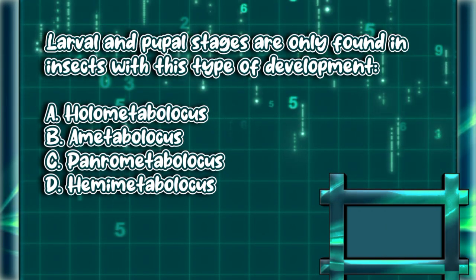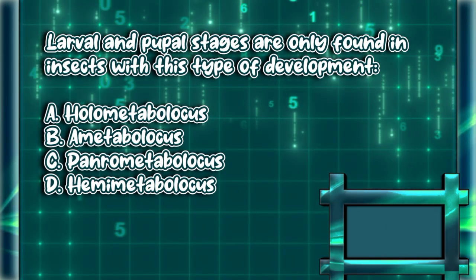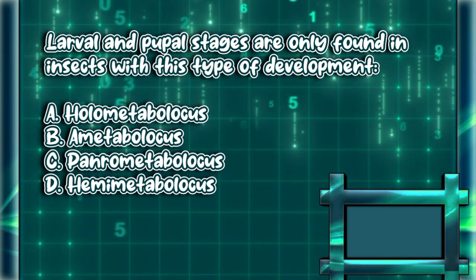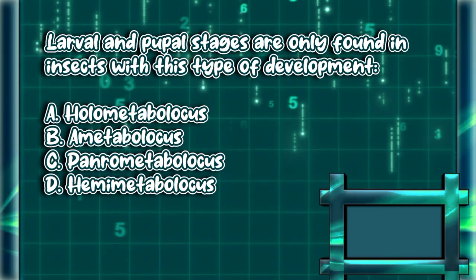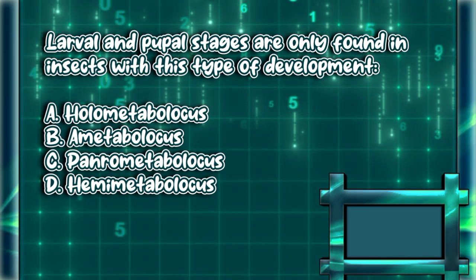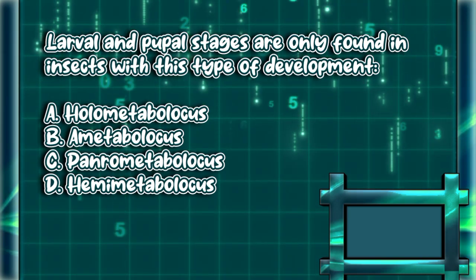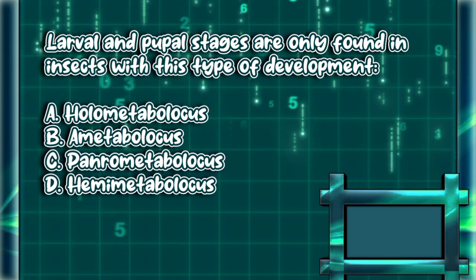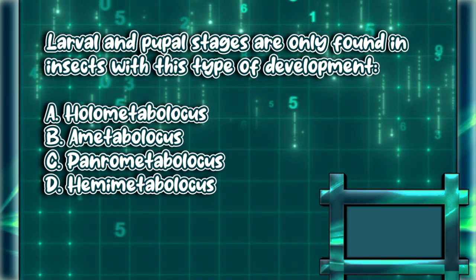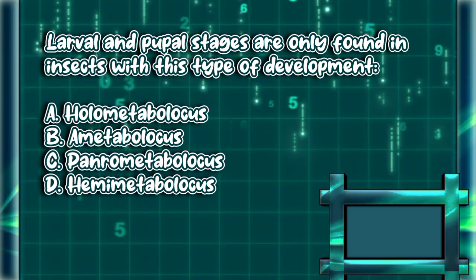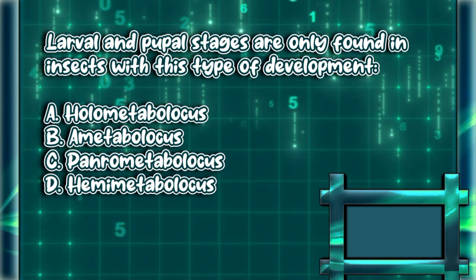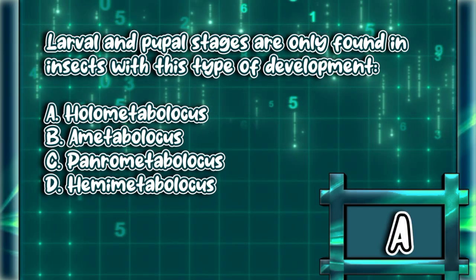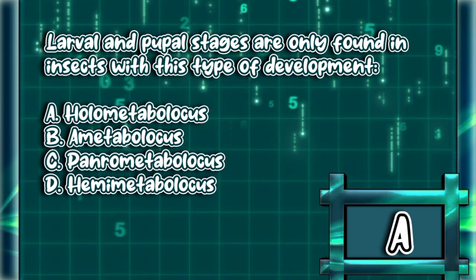Larval and pupal stages are only found in insects with this type of development. A. Holometabolous. B. Ametabolous. C. Panrometabolous. D. Hemimetabolous. The answer is letter A.